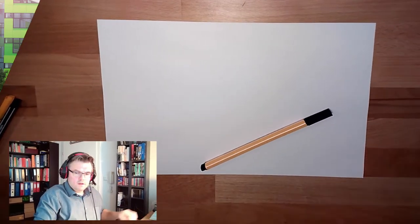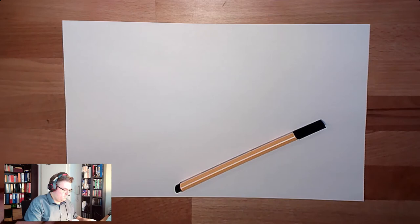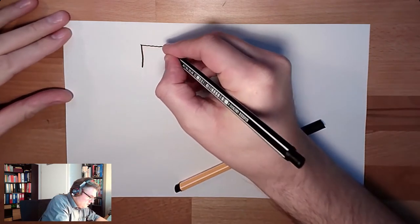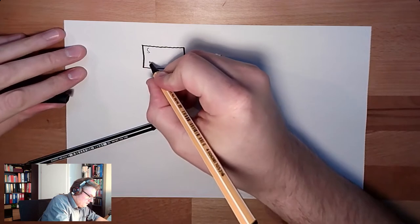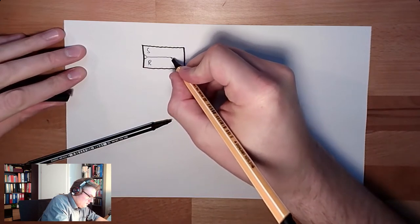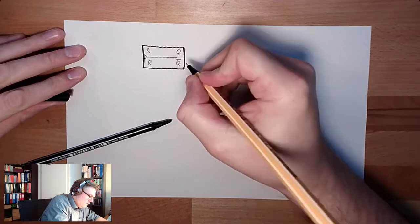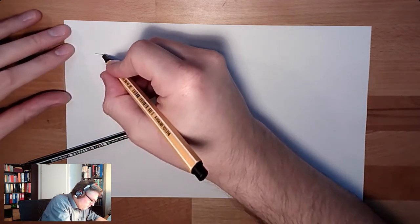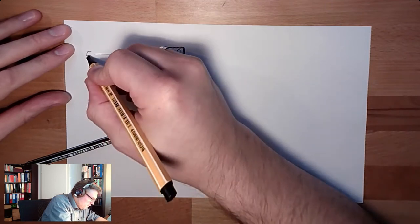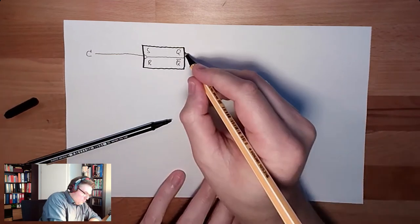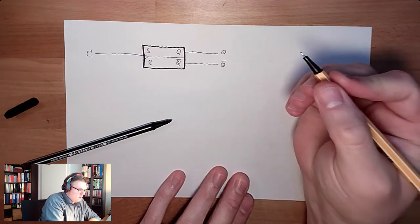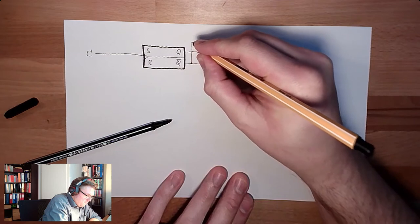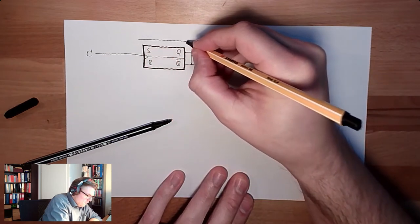I'll show you what I mean. Okay, so let's have a look. Let's draw our first flip-flop. Let's assume this is our memory, with S and R. Here we have Q, Q inverted, and here we have the clock line, C. So, the output is Q, and Q inverted, and we feed this back vice versa.